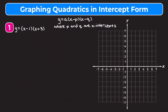In this video we're learning how to graph quadratics in intercept form. Intercept form is y equals a times the quantity of x minus p times the quantity of x minus q, where p and q are the x-intercepts. So intercept form shows us the x-intercepts of our quadratic, which is why it's called intercept form. Let's jump into example one and learn how to graph when our quadratics are written in this form.